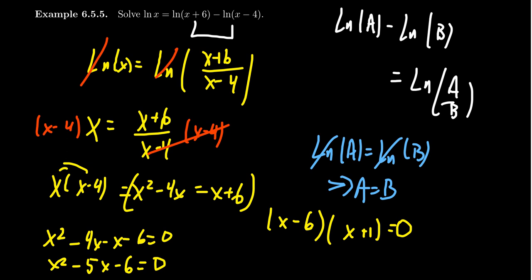With the factorization in hand, we then see that the solutions are potentially 6 and negative 1. But like we've seen before, we have to double check the domains. If I plug in 6, you get natural log of 6, which gives me no concern. You get natural log of 6 plus 6, which is 12. And then natural log of 6 minus 4, which would be natural log of 2. There's no domain issues right there. 6 seems to be kosher.